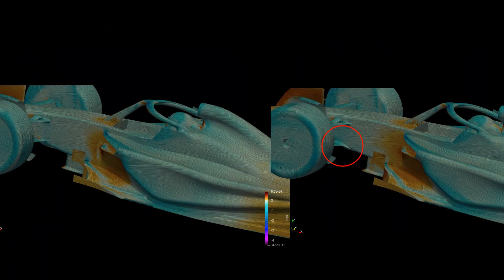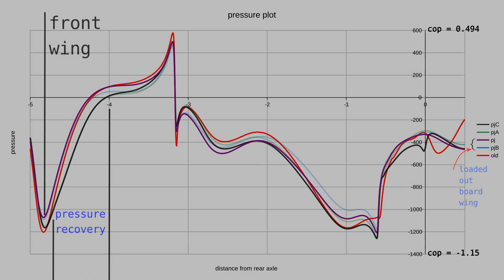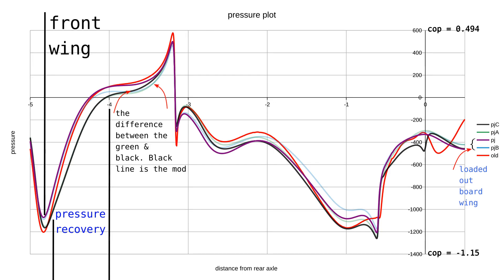Looking at the streak lines on the chassis, before and after the change to the suspension interface, clear signs of detachment have been removed. You can see the difference in the centerline plot here, it increases in pressure under the chassis and before the floor.